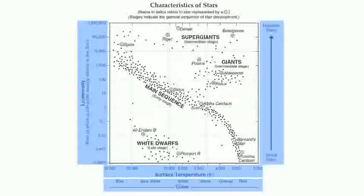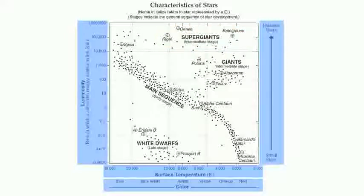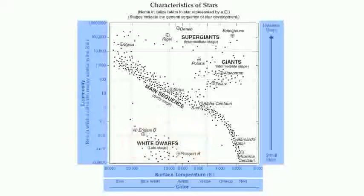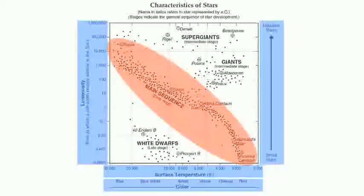Many stars are organized by mass and by size. We have supergiants, which are an intermediate stage — they're kind of middle-aged stars. We have giants, which are also middle-aged stars. We have white dwarfs, which are late-age or very old stars. And we have what are called main-sequence stars, which are the early-age stars. That's actually where our sun fits into that category as well.